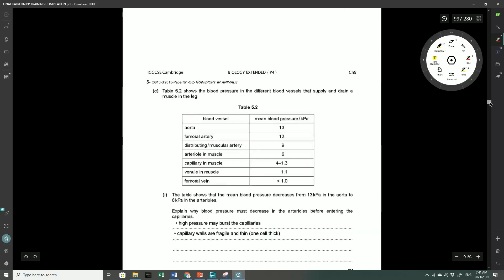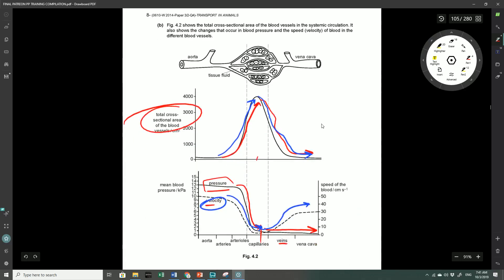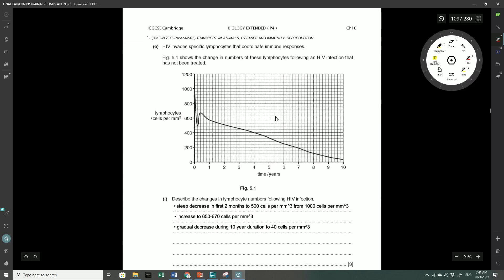We're going to go through one final question on page 109, which is about HIV. HIV invades specific lymphocytes that coordinate immune responses. Figure 5.1 shows the change in numbers of these lymphocytes following an HIV infection that has not been treated. Here we've got the lymphocyte number on the y-axis and time in years on the x-axis. Let's once again separate the graph into its different components. We get that steep decline in this first period, then you get this slight increase in the second period, and you get that gradual decline in the third period of the graph.